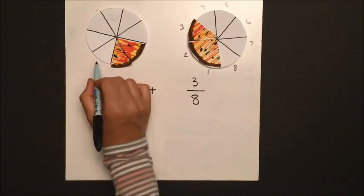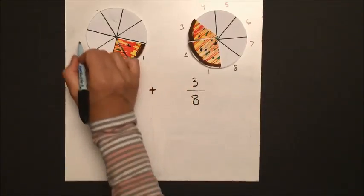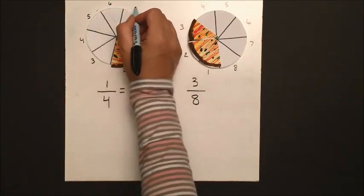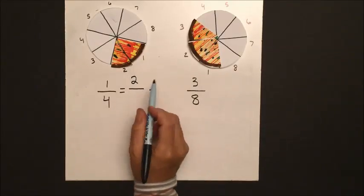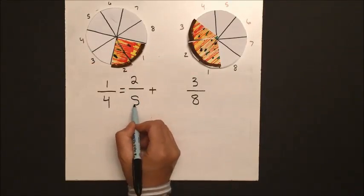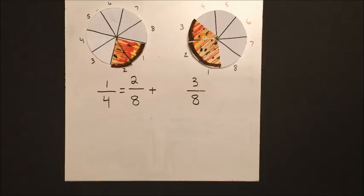So going back to the math, if we then divide up our first pizza into the possible slices, we now have eight possible slices. And that first piece that we cut up was cut up into two pieces, so it's two out of eight.